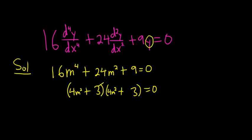And it does. 3 times 3 is 9. The inside is 12, the outside is 12. When you add them, you get 24, which is the middle term.